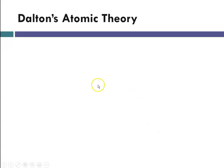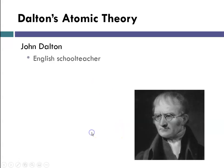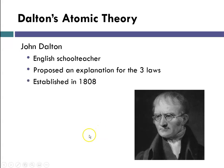This led scientists to develop an atomic theory. The scientist was John Dalton. There's his picture. He was an English schoolteacher, and he proposed an explanation for those three laws. His theory was proposed in 1808.